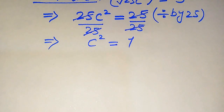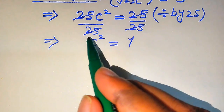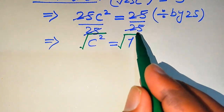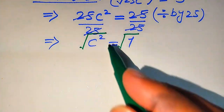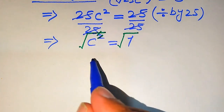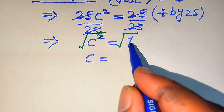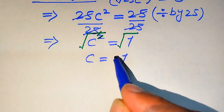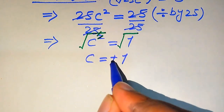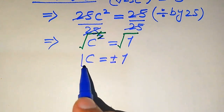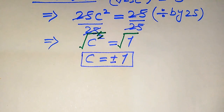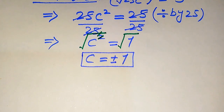Our target is to find the values of C, so we need to remove the square sign by taking the square root of both sides. The square and square root cancel, giving C equals the square root of 1, which is 1. Because we applied the square root to both sides, we include a plus-minus sign, giving us the two roots C equals plus or minus 1.